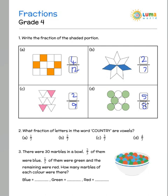What fraction of the letters in the word country are vowels? So we have 2 of them which are O and U are the ones which are vowels and total of 7. So it is 2 by 7.